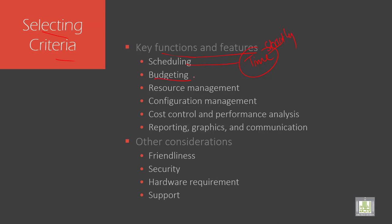And budgeting — all talks about money, funds, etc. Then resource management is very important; it is the efficient and effective development of an organization. It includes money, human skills, information technology, and natural resources.